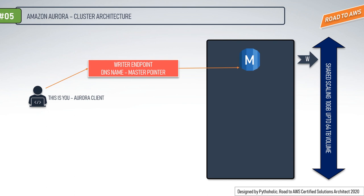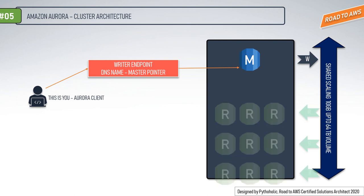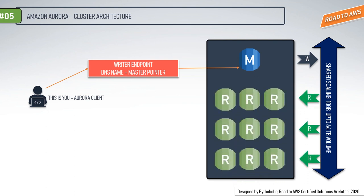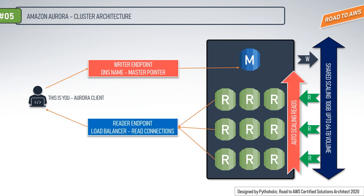You can create read replicas that can auto-scale up to 15 read replica instances. But when we speak about auto-scaling, instances may fail — so how will the client know how to connect to the read replicas? For this, RDS provides a reader endpoint, which also acts as a load balancer. It connects to all the read replicas and handles tracking where your read replicas are.